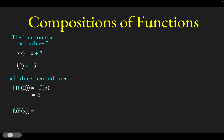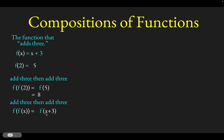If we think about f of f of x, this means this is the function that adds 3 and then adds 3 again. So if we apply the function one time to x, we'll get x plus 3. If we apply the function again, we'll end up with x plus 6. The result of adding 3 and then adding 3 is just to add 6 to the thing that you started with.